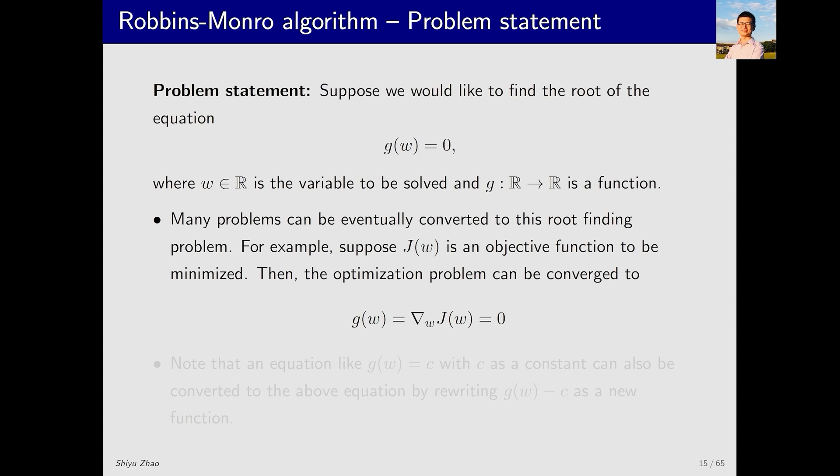A typical example is optimization. For instance, to optimize an objective function J(w), we usually solve this equation where the gradient of J(w) equals zero. This is a necessary condition for J(w) to reach a maximum or minimum. While it is not a sufficient condition, we can find local extremum in many cases. If J(w) has only one extremum, it becomes a sufficient condition.